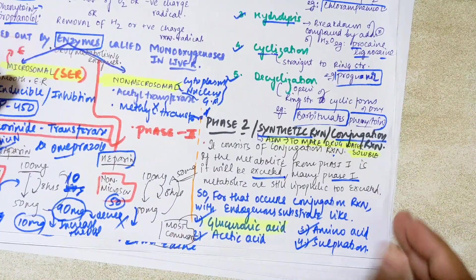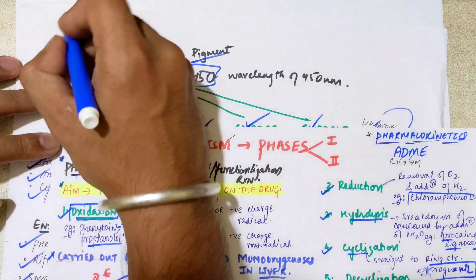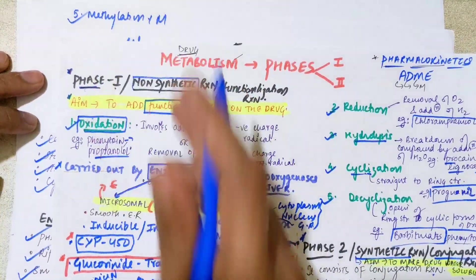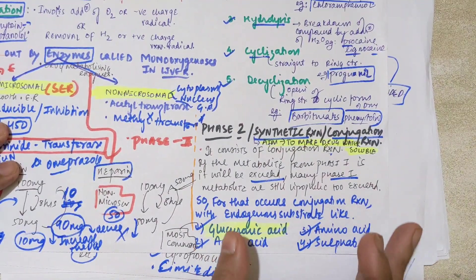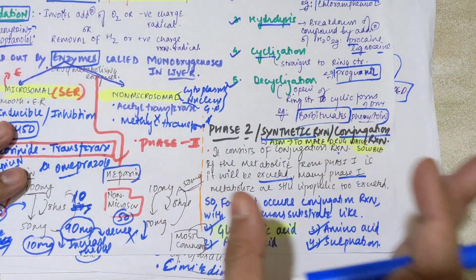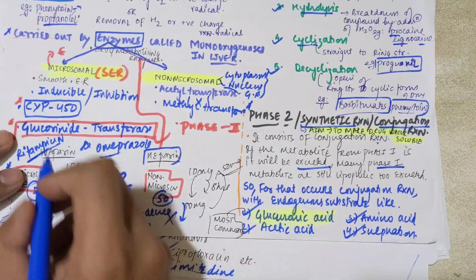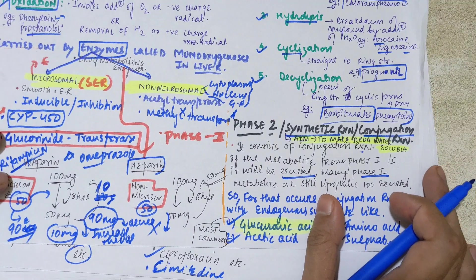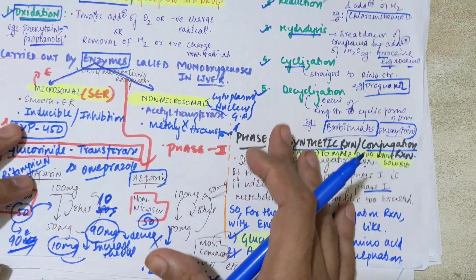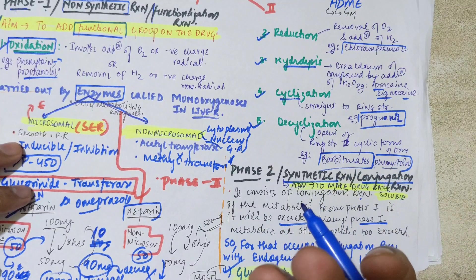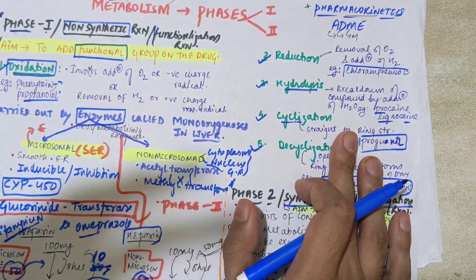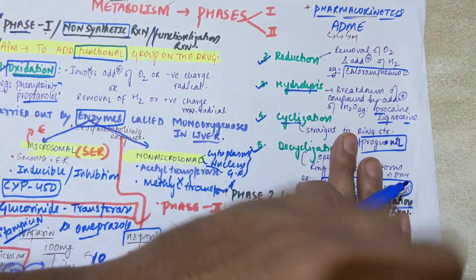Other phase two reactions include acetylation by acetyltransferase or acetyl-CoA, sulfation, methylation by methyltransferase, and glycine conjugation, among others. The enzymes for all phase two reactions are non-microsomal, except for glucuronidation, which is performed by glucuronide transferase — a microsomal enzyme — and is therefore inducible and inhibitable. This was the main concept of metabolism covering phases one and two. The next video will discuss excretion of the drug. Thank you — please like, share, and subscribe.